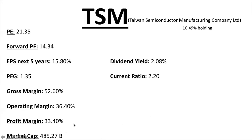Dividend yield shows the percent you're getting back off the share price — so if the share price is $100, you'd be getting $2.08 in dividends per year. The dividend yield is always changing with the price. The current ratio is total assets divided by total liabilities — you want that to be over one. With that quickly overviewed, let's go into the numbers.